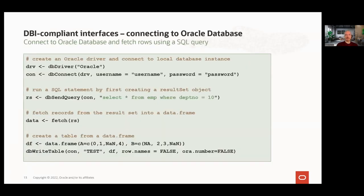What do some of these interfaces look like? Let's take the ROracle package, a DBI-compliant interface — it's open source and available for download. In this example, we connect to an Oracle Database and fetch rows using a query. We get a driver object, connect to the database, and invoke dbSendQuery, which takes a connection object and SQL query as arguments. This is what we mean when we say some interfaces involve writing SQL — both powerful and limiting depending on the user's skill set. We can fetch data from the database to the client, but we can also write DataFrame data to the database, leaving us with a table in the connected database schema.